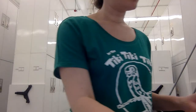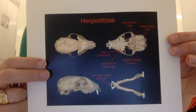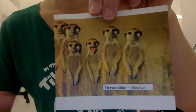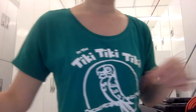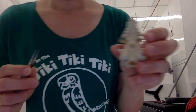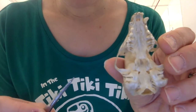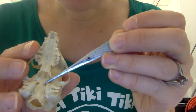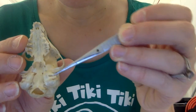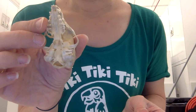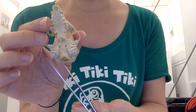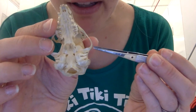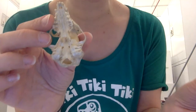Moving on to Herpestidae. The example you're going to see is a meerkat — this one's very excited to show you its skull. Again, another feliform. What I want to point out is this foramen right here — this hole leading into the bulla. You can see it really well from this angle. You can also see some of the striations in the bulla, with a very distinct subdivision there.